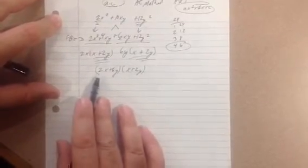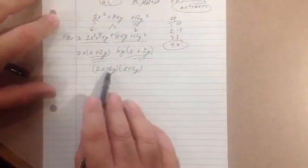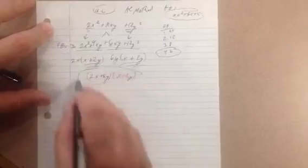And double check it: 2x times x is 2x². 6xy plus 4xy is 10xy. And 12y². There you go.